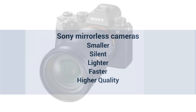Moving on to Sony mirrorless cameras: smaller, totally silent — not a noise out of them — lighter, faster, and higher quality. Again, speaking from experience: the Sony A9 I'm using at the moment is more than a match for the Nikon D5, which I've shot extensively. So the mirrorless camera I'm using can do anything I need it to do — sport, portraiture, wildlife. It's just a great, great solution.